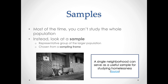Every 10 years in the United States, we do a census, and in that census we gather information about people living in the U.S. That census is required to be filled out by everyone, so presumably it is a population-based study. But one of the things we know about the census is that people don't actually all fill it out.